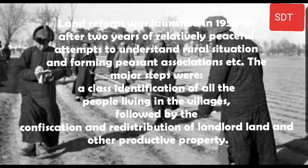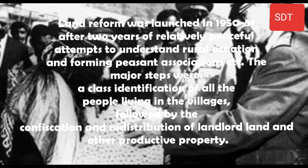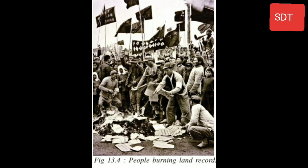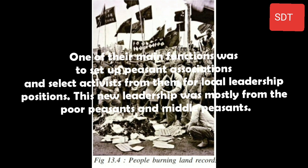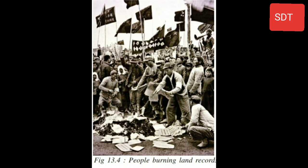Land Reform was launched in 1950–51 after two years of relatively peaceful attempts to understand the rural situation and forming peasant associations. The major steps were class identification of all people living in villages, followed by confiscation and redistribution of landlord land and other productive property. Work teams dispatched by county-level land reform committees played a leading role. One of their main functions was to set up peasant associations and select activists for local leadership positions, mostly from poor and middle peasants.